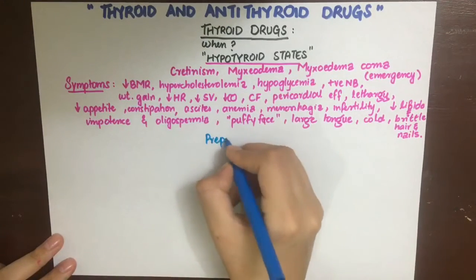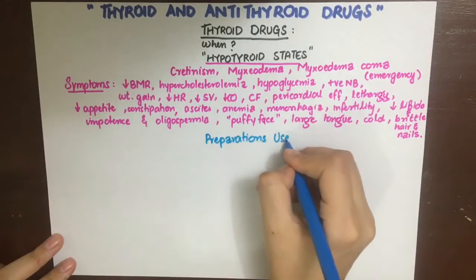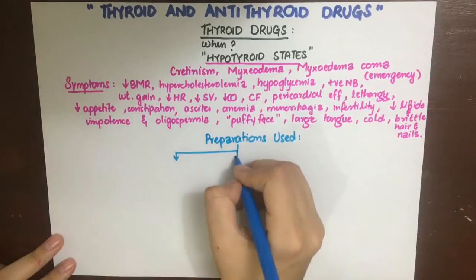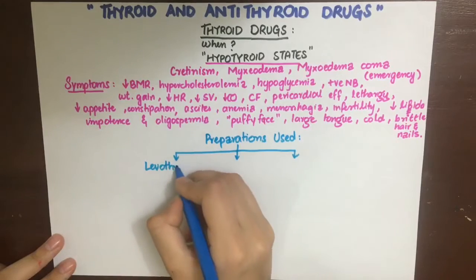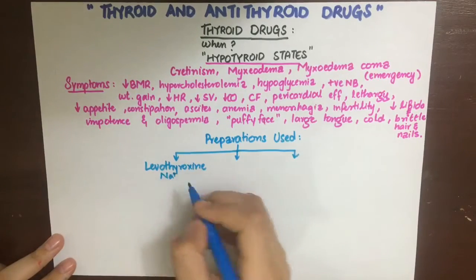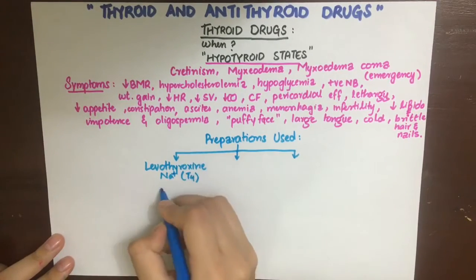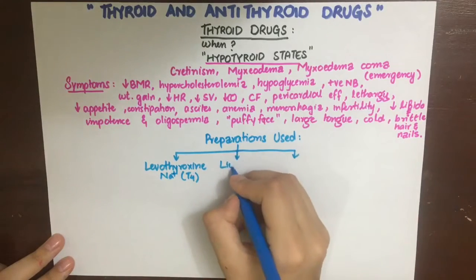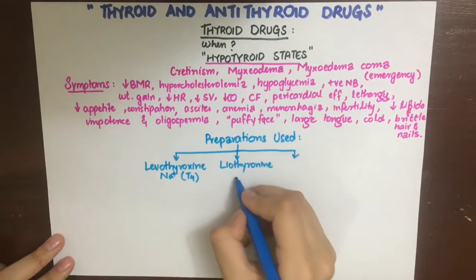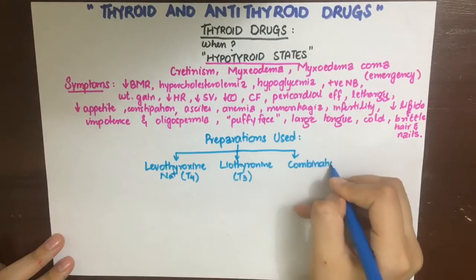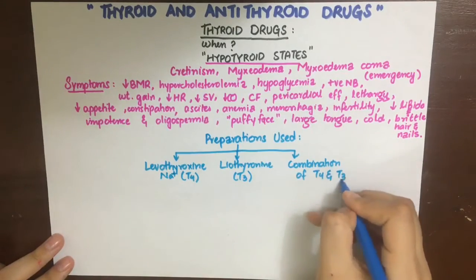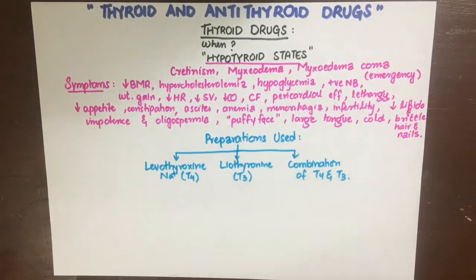To treat all of these symptoms, the only thing we need to do is give thyroid hormone. We give it in three different preparations: one is levothyroxine sodium, which is T4, in the form of a tablet or IV; liothyronine, which is T3, can be given orally or IV; or a combination of T4 and T3 in the ratio of 4:1.